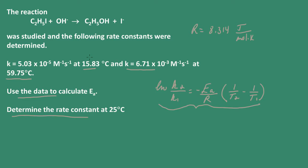A couple of things we need to do here is convert the Celsius temperatures to Kelvin. This first one, 15.83 degrees Celsius, is equivalent to 288.98 Kelvin, and 59.75 degrees Celsius is 332.9 Kelvin. So we're all set to go. What I'm going to do is solve this equation for the activation energy before I plug anything in.